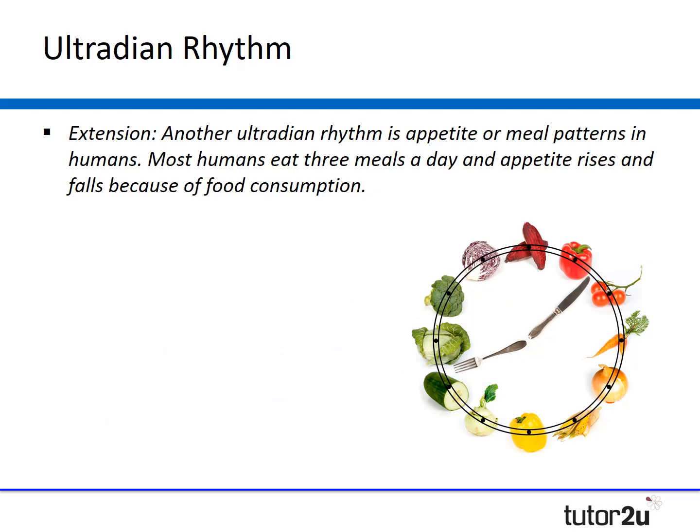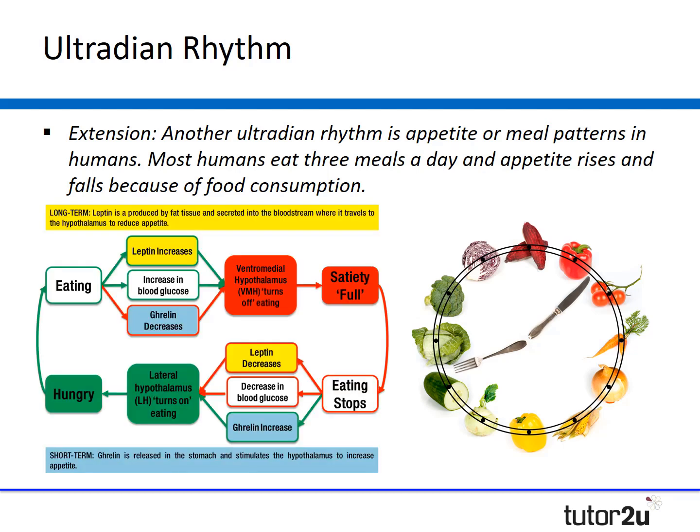As an extension, another ultradian rhythm is appetite and meal patterns in humans. Most humans eat three meals a day and appetite rises and falls in relation to food consumption. For those studying the eating behaviour topic, you may be aware of the underlying neural and biological mechanisms involved in the control of eating, so human meal patterns would be a great ultradian rhythm example if you're studying that topic.